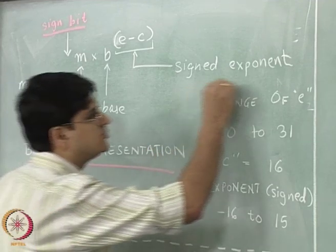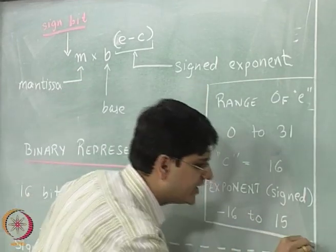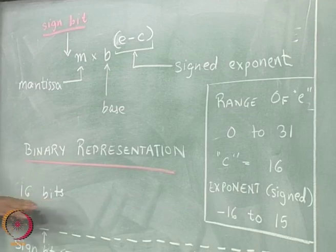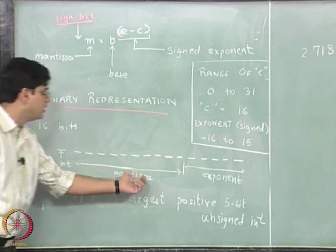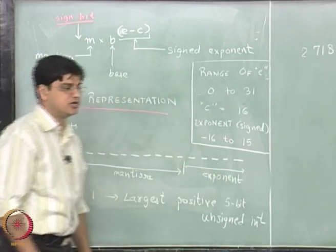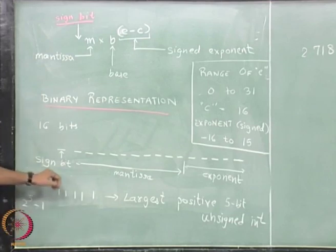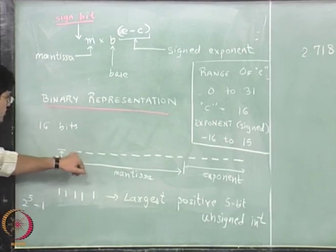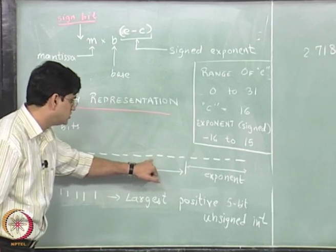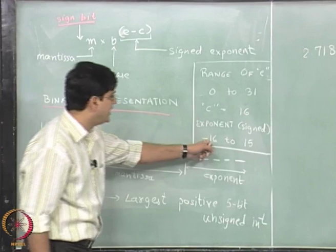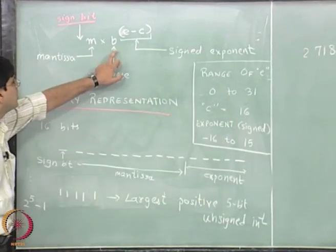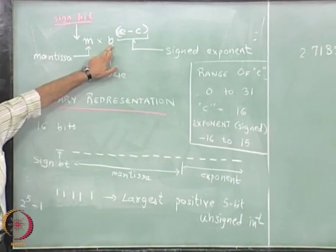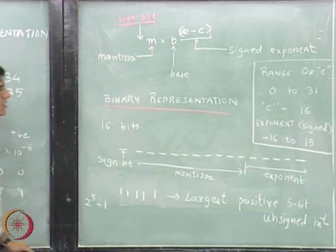This is the range of exponent that we are going to get with this particular representation, if we have 16-bit floating point numbers with 1 sign bit, 10 mantissa bits, and 5 exponent bits. The smallest number that can be represented is going to be 0.1000000000 multiplied by 2 to the power minus 16, because the base is no longer 10 — the base is B. So with this particular representation, we will calculate accordingly.